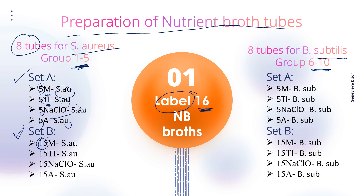For groups 6 to 10, we also have Set A and Set B with the same labeling — five minutes for merthiolate — and the difference is the name of the organism.